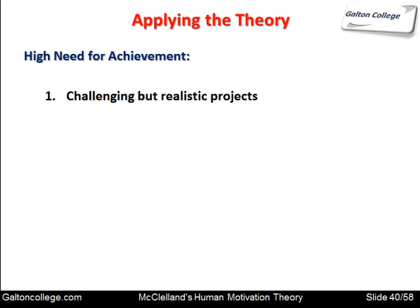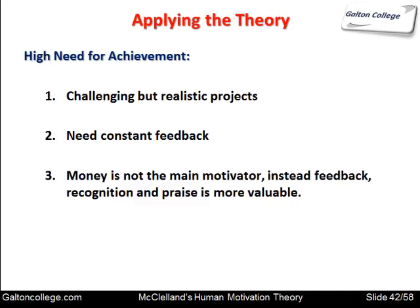For need-for-achievement individuals, it's important that the work is challenging but realistic — achievable. They like feedback: being told how well they're doing, what issues they're likely to confront, and how to deal with them. Money is not the main motivator; feedback, recognition, and praise are more valuable. They also like to be grouped with other high achievers and to be seen in that light.